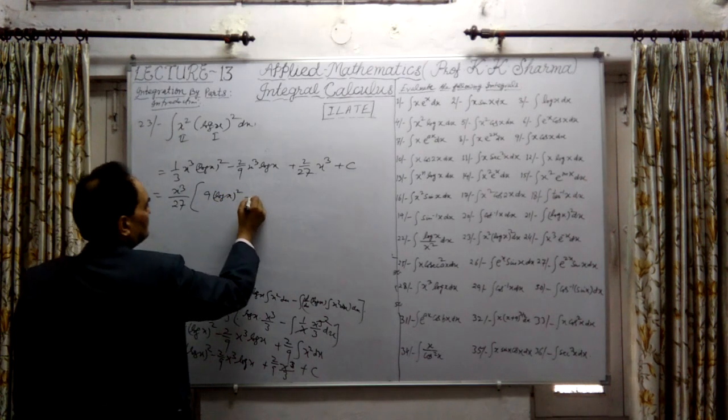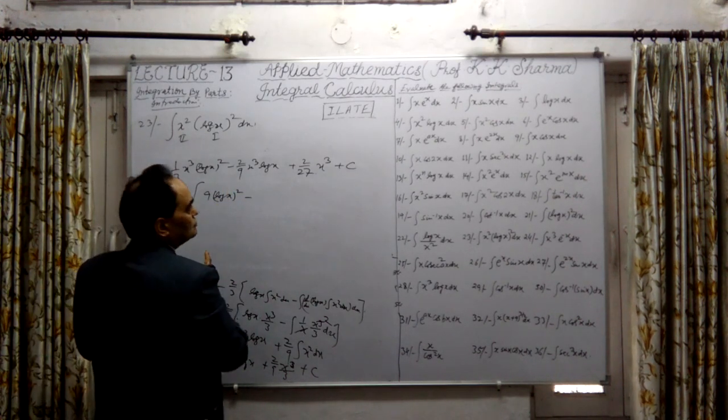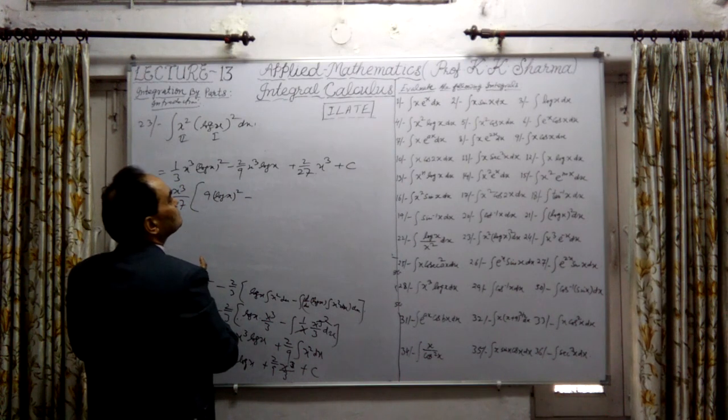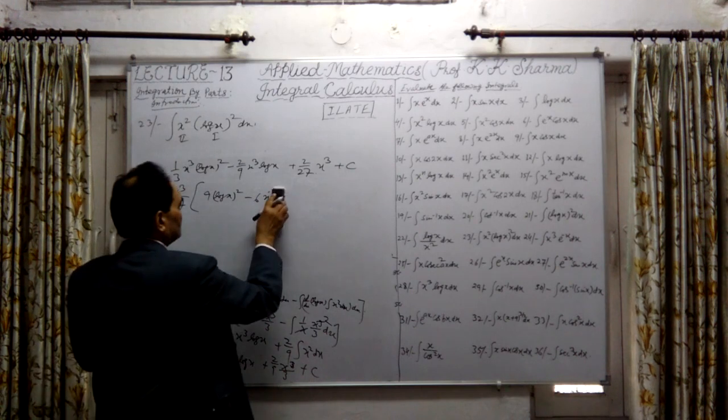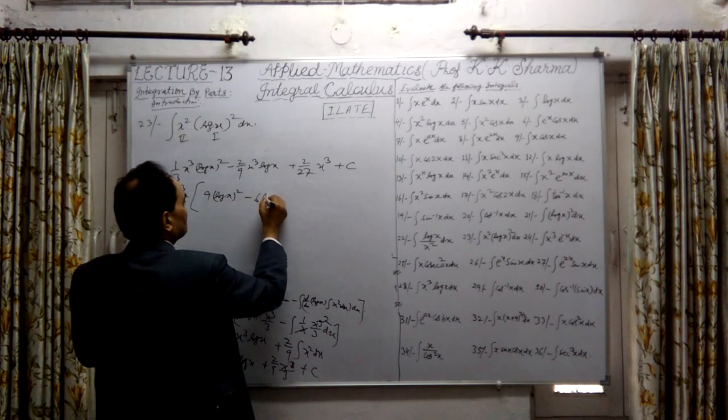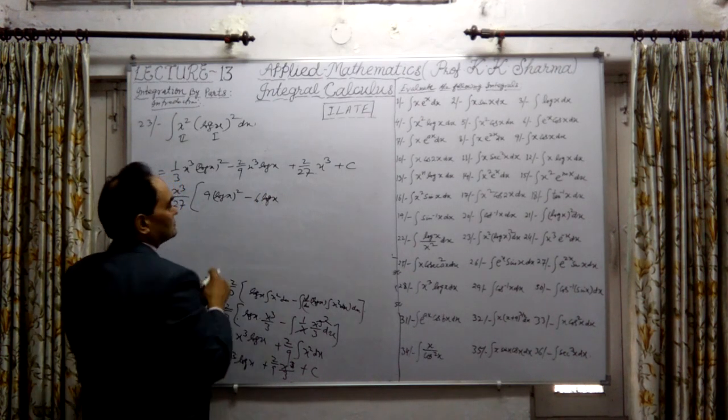Minus it will be 2 into 3, 6x. Sorry, xq we have taken form, only log x. 6 into log x.